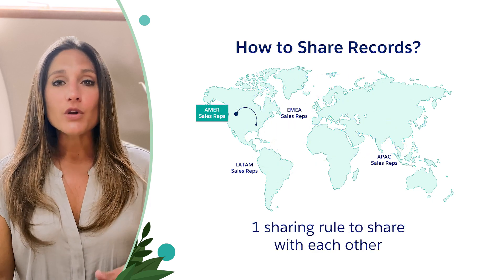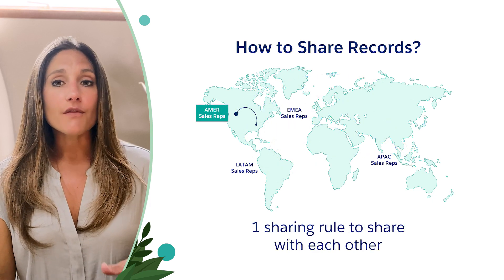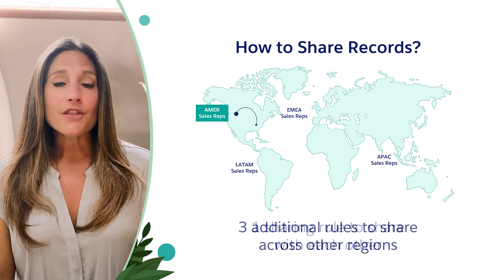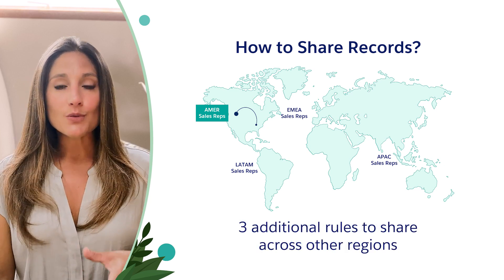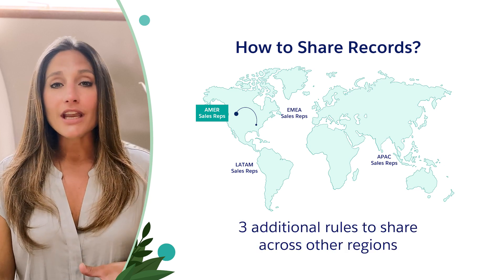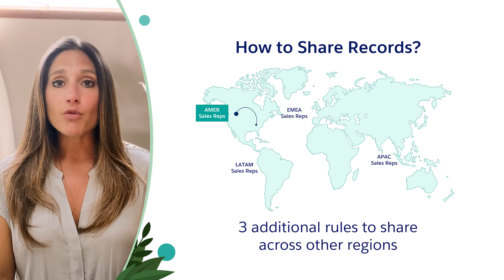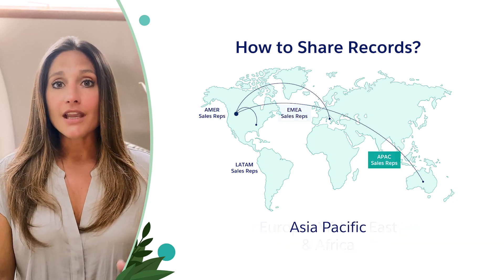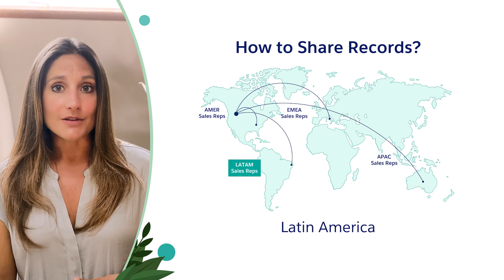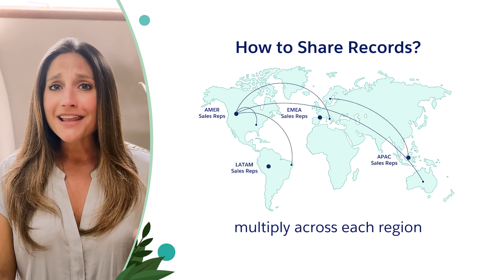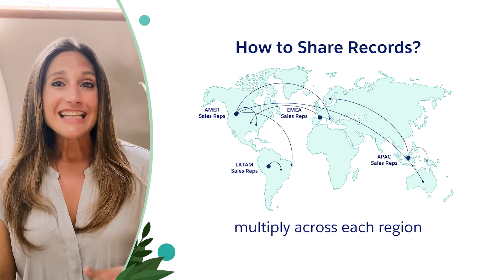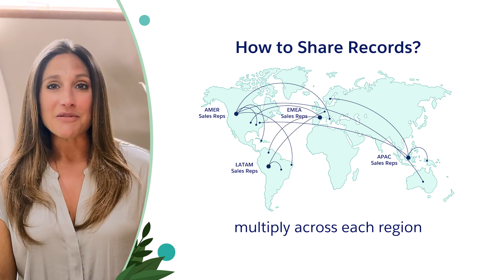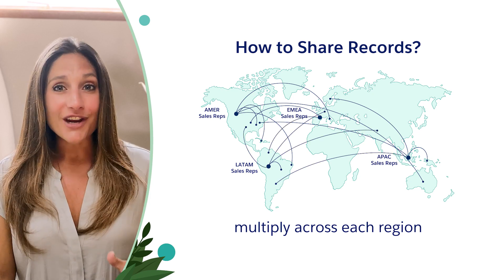One sharing role would share opportunity records of the North, Central, and South American team with each other, and three additional roles would need to be created to share those AMER team records with Europe, Middle East, and Africa, Asia Pacific, and Latin America's sales teams. You can multiply that by four across each region, and you have 16 sharing roles. That's a lot of sharing roles.